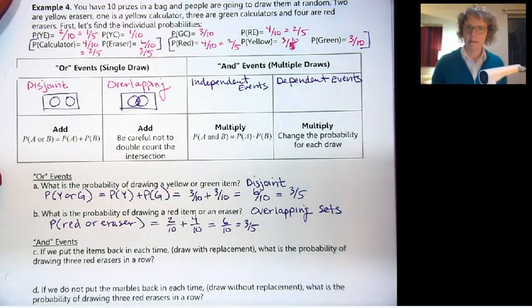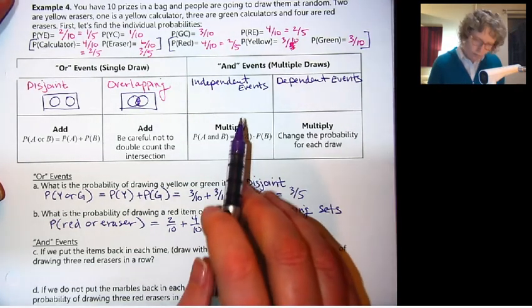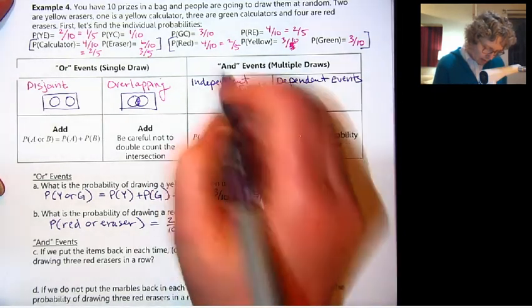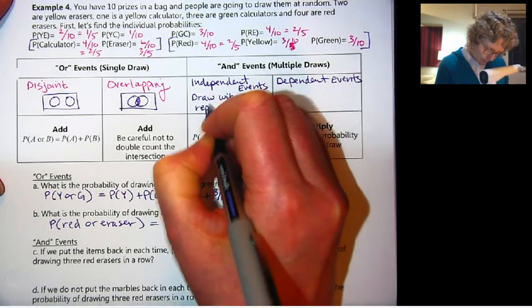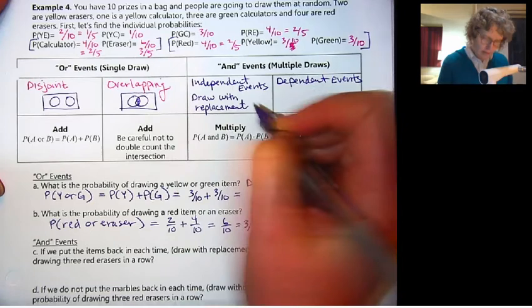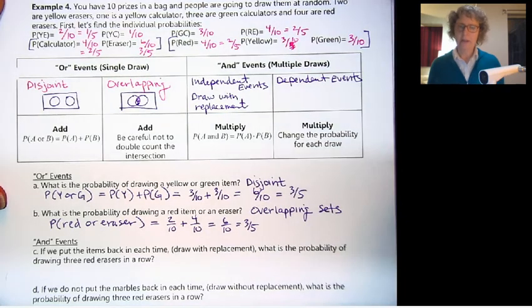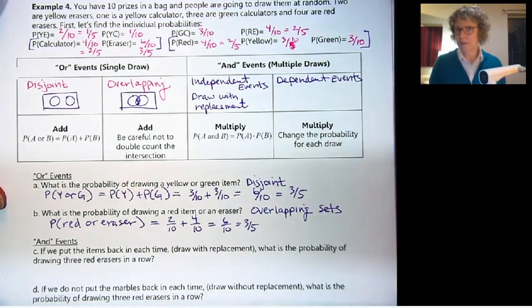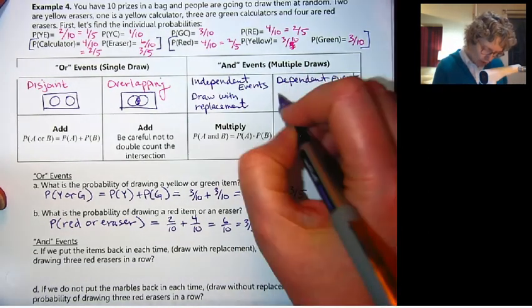Now AND, that narrows down your possibilities. So we have two different situations for AND. The first one is independent events. The second one is dependent events. When we talk about OR, we're talking about a single event, a single draw, drawing once out of the bag. With an AND, we're talking about multiple draws.